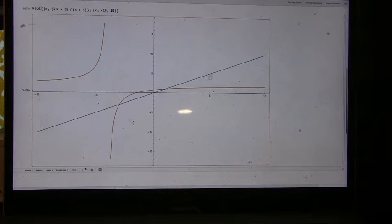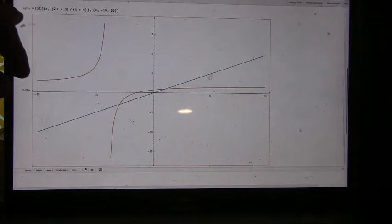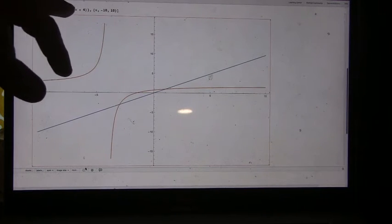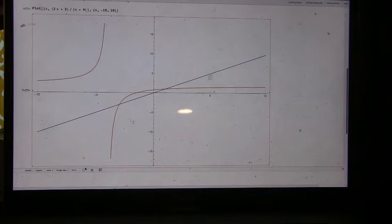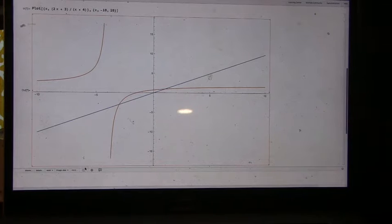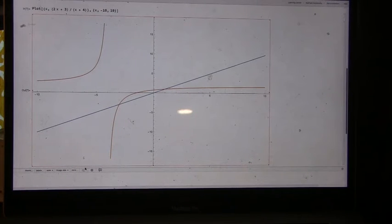Okay, so we've done a plot of x and (2x + 3)/(x + 4). Hopefully this shows up reasonably well on the screen. x is in blue and the rational function is in orange.